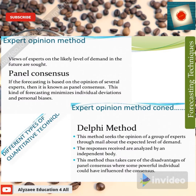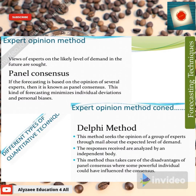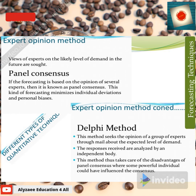Another technique is the expert opinion method, where the views of experts on the likely level of demand in the future are sought. If the forecasting is based on the opinion of several experts, it is known as panel consensus — like a senior board or body of directors. For special projects like construction of a dam or a project like Attabad Lake, panel consensus is used and discussion is done on how to mitigate problems. This minimizes individual deviations and personal bias.